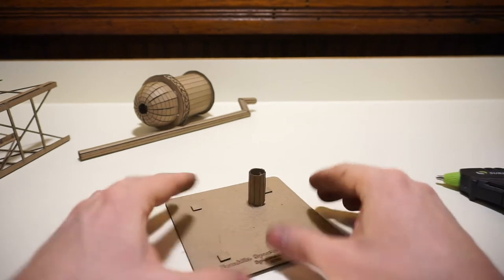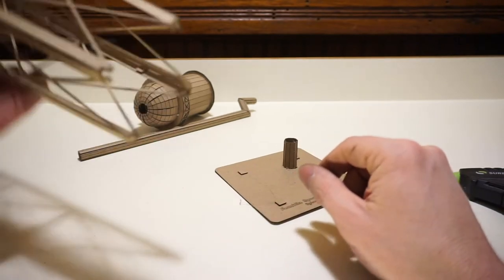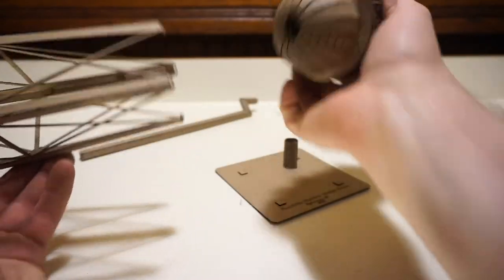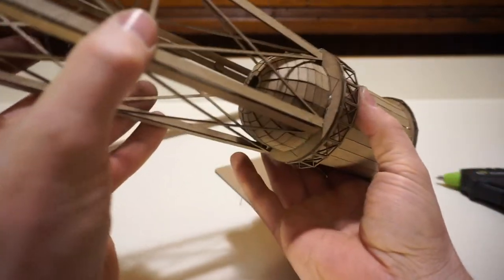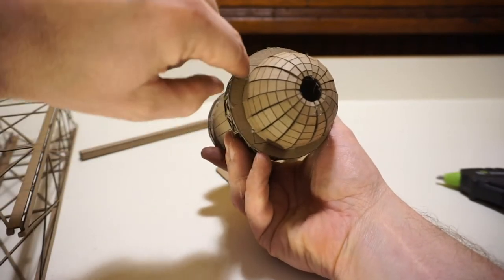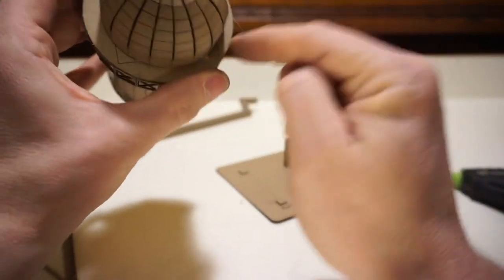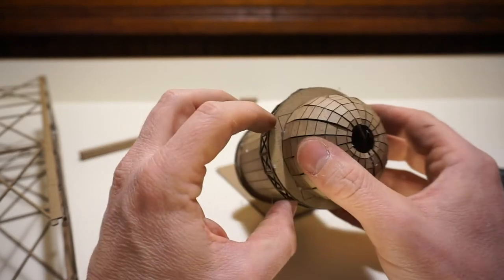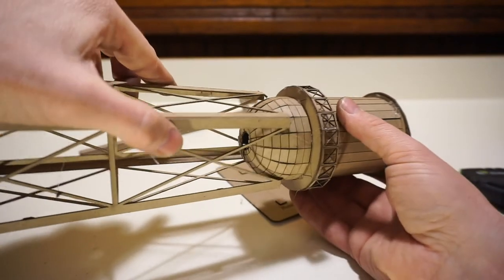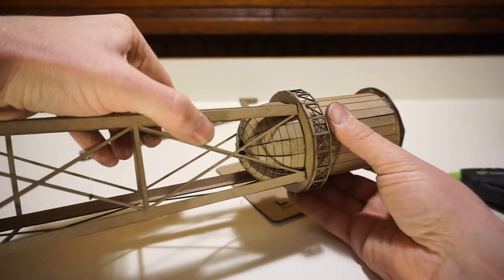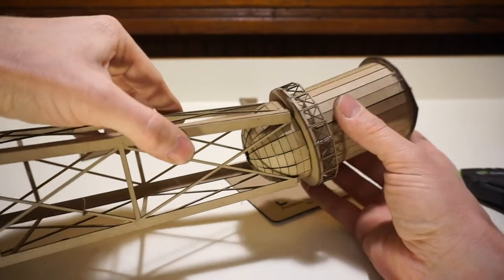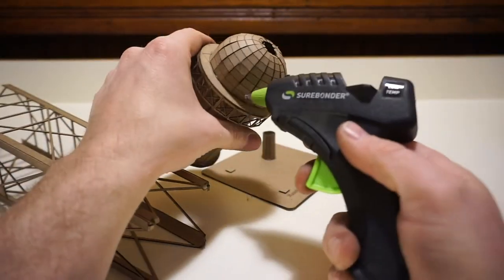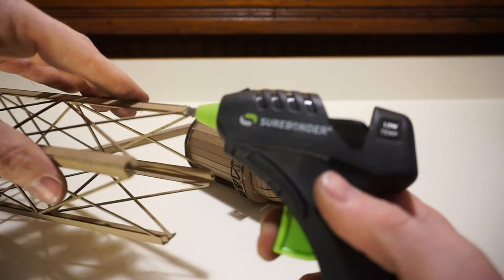Next thing we're going to do is we're going to put the tank base onto the tank top like so. Now if you notice, we have these score square corners on each one of these, right here, right here, and here. That is where we want to line up our tower structure. It's going to slip right on there, so what we'll do is take some glue and apply it right to the little tabs.